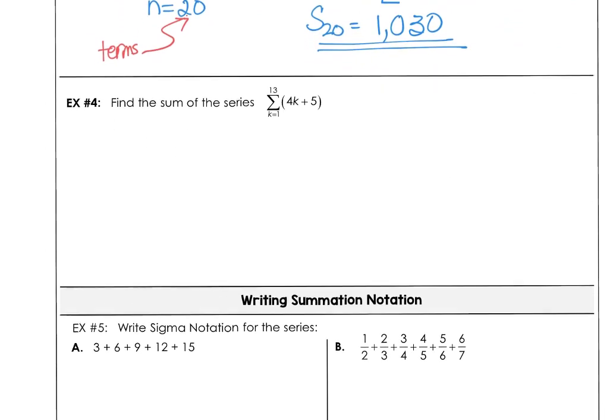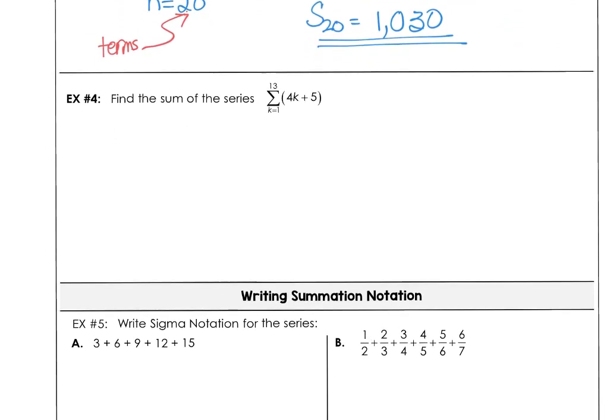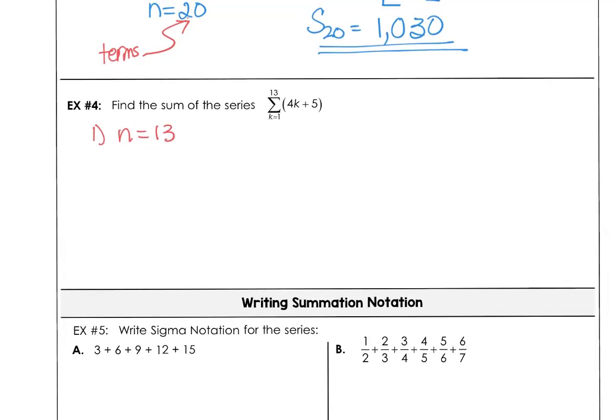For example 4, we want to find the sum of the series of the rule 4k plus 5. We're starting at 1 and we're going to 13. So we know n is 13. a sub 1 is 4 times 1 plus 5, so our first term is 9. The last term, the 13th term, is 4 times 13 plus 5, so our last term is 57.